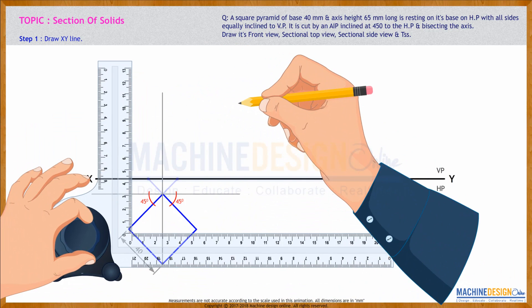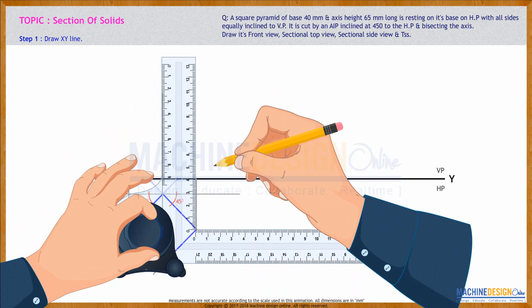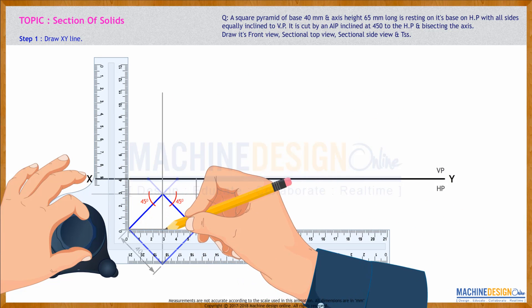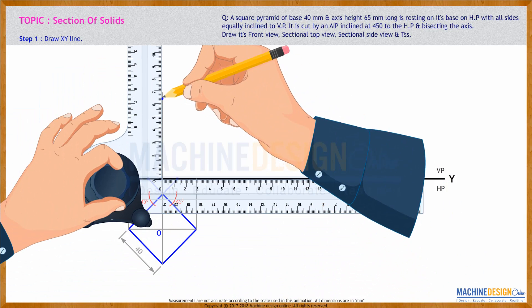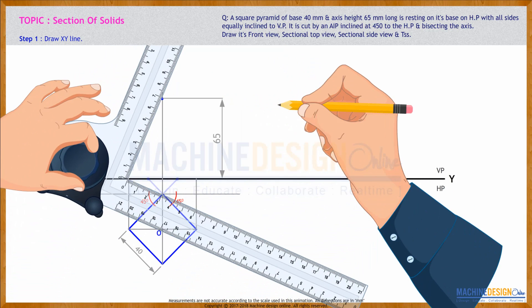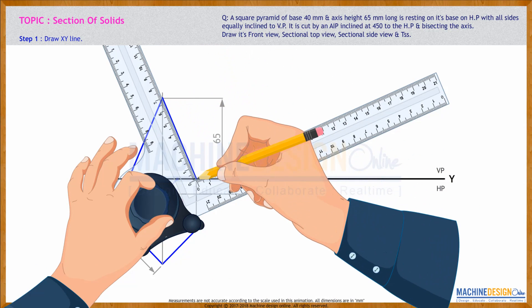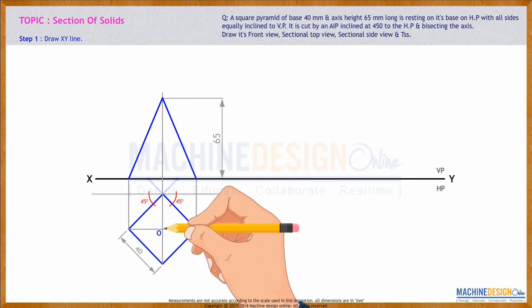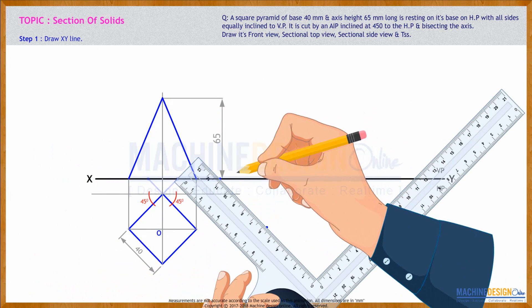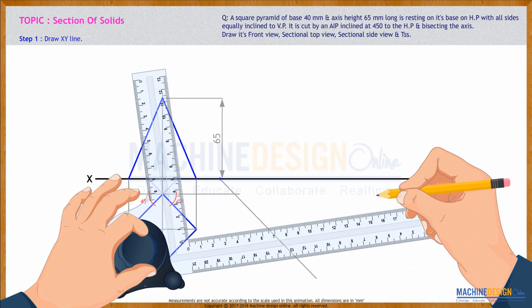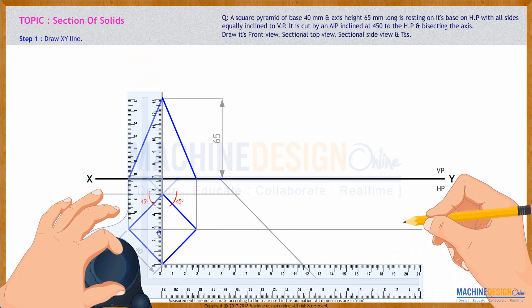This is top view. Front view, height 65. So first we'll draw top view, front view, then we'll draw 45 from here.